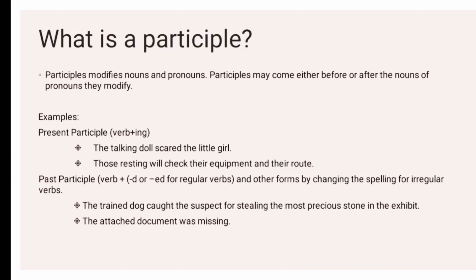Participles modify nouns and pronouns. Participles may come either before or after the nouns or pronouns they modify. For example, present participle (verb + -ing): 'The talking doll scared the little girl.' Our present participle here is talking, and as you can see, the present participle comes before the noun it modifies — doll.